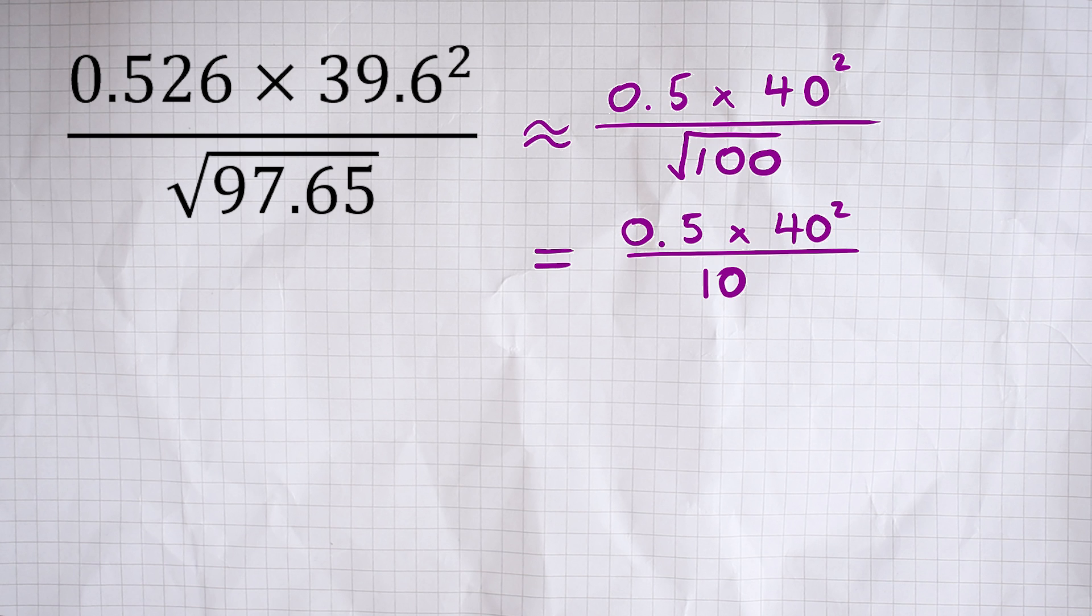So what we finally get is 0.5 times 1,600 divided by 10. Well, 0.5 times 1,600—that's the same as a half times 1,600, and that's really just the same as saying half of 1,600, which is 800.